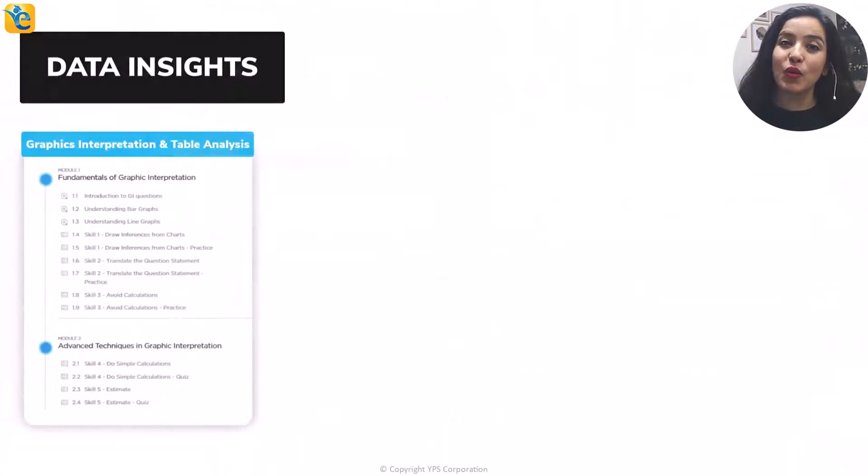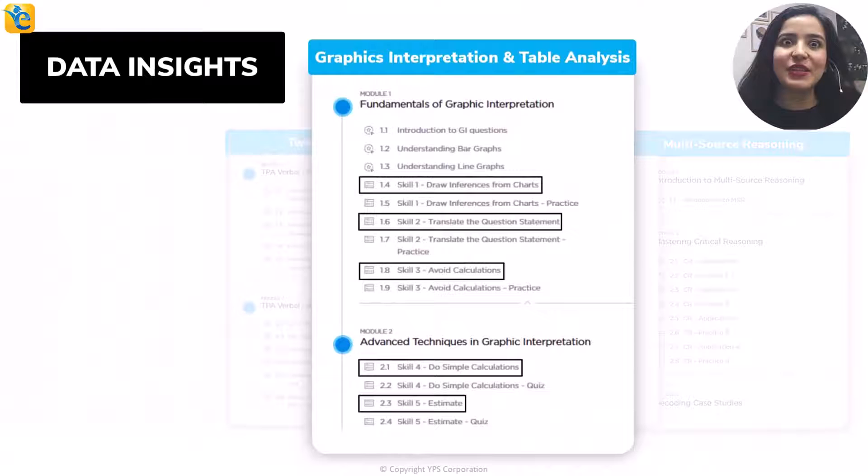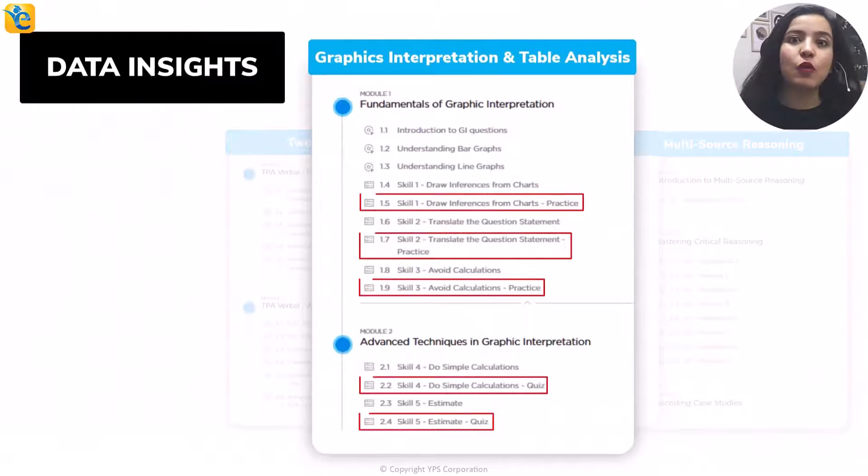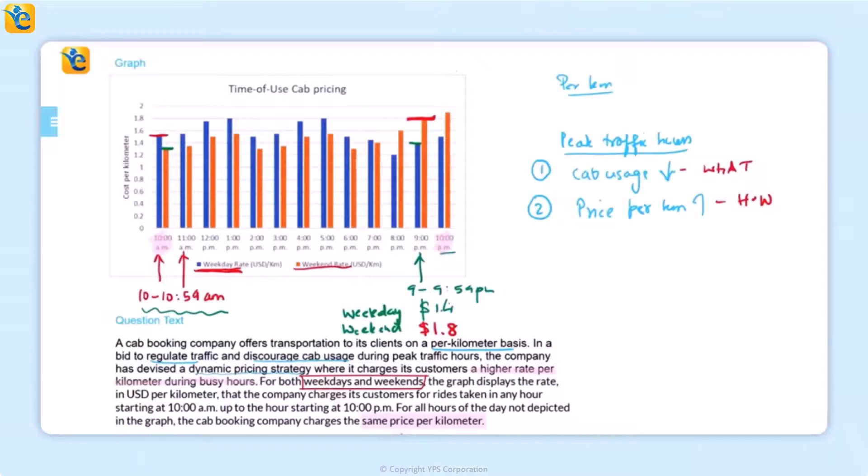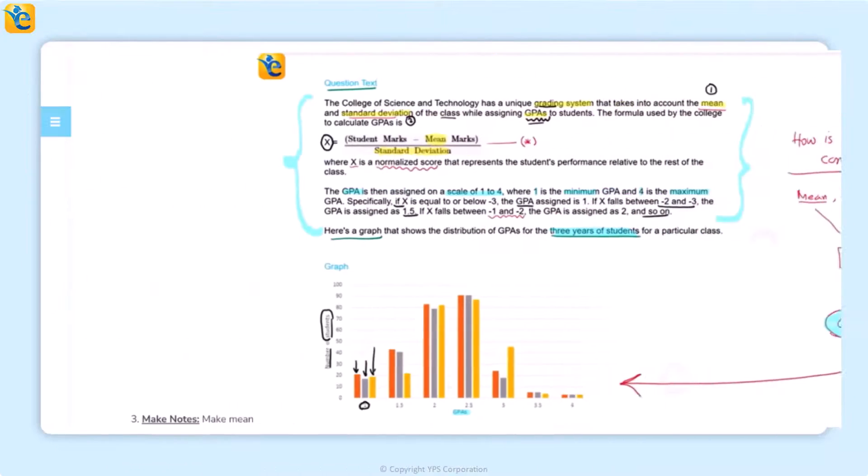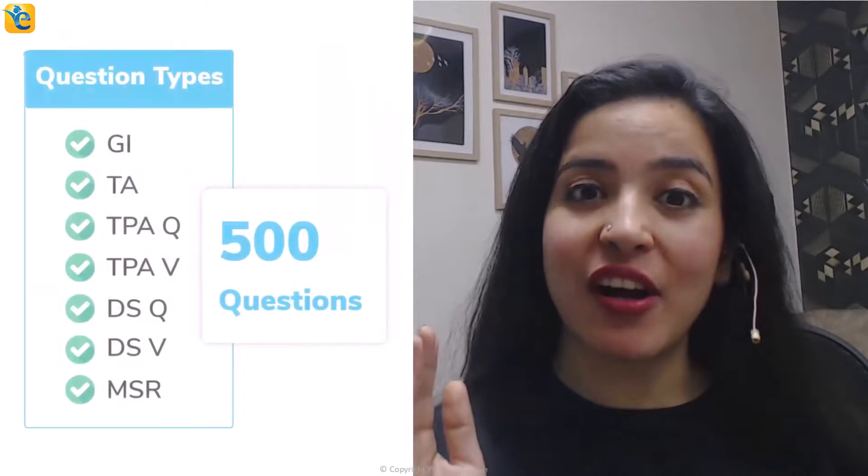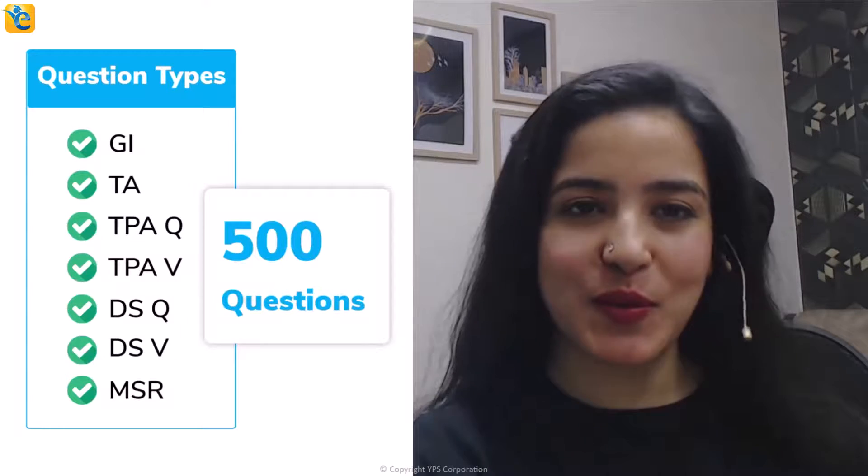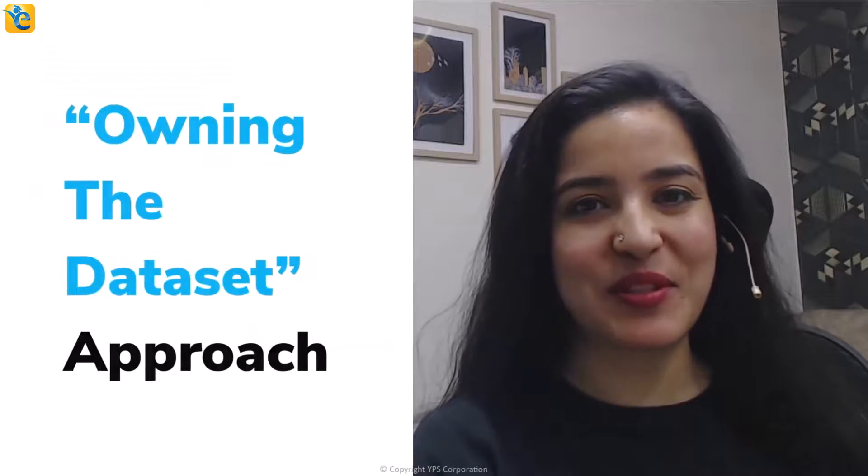Could you have arrived at the approach of solving this question with this level of clarity had you not spent the effort in thoroughly understanding the information presented? Such is the power of the process of owning the data set. Because this skill may not come naturally to many of you, we have created a course architecture that ensures we teach you this skill through every guided quiz in the e-GMAT DI course, and we reinforce the same in every practice quiz. Throughout the DI course, through around 500 questions, you will learn such process skills so that you can also comfortably use the owning the data set approach.